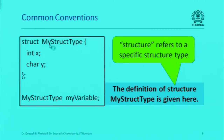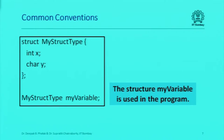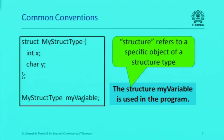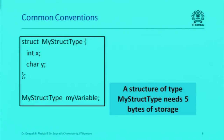Or if I say that my variable is a variable of type my struct type, sometimes we say that this is a structure itself because it's a variable of struct my struct type. So sometimes the word structure is used to refer to an object of a particular structure.